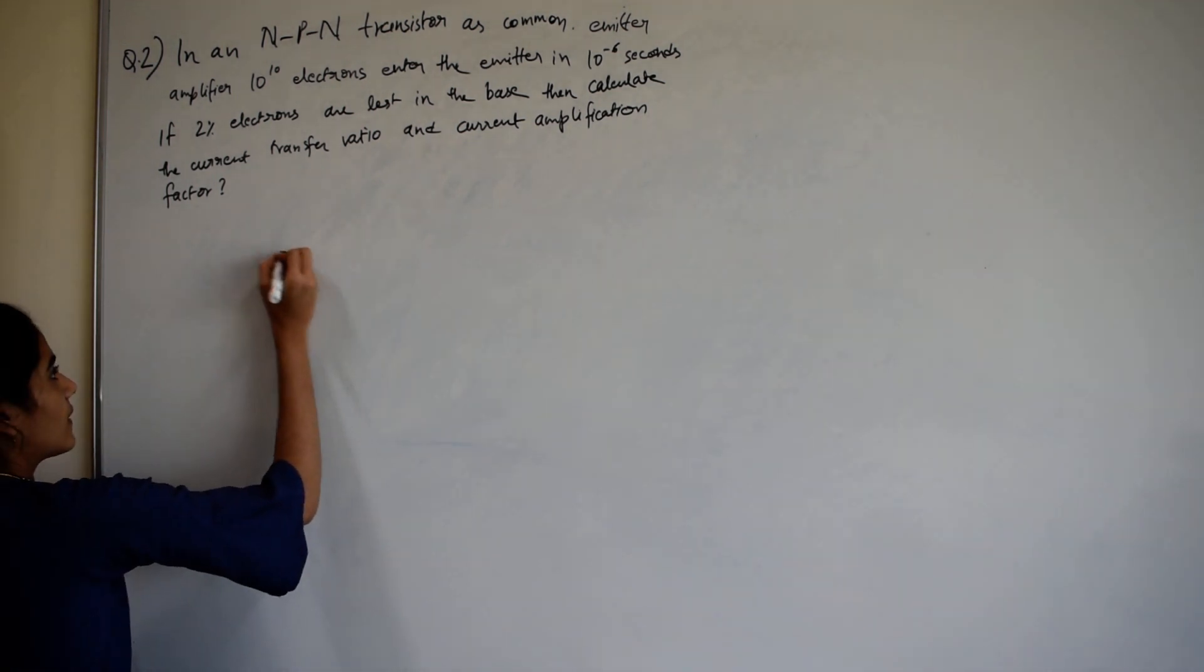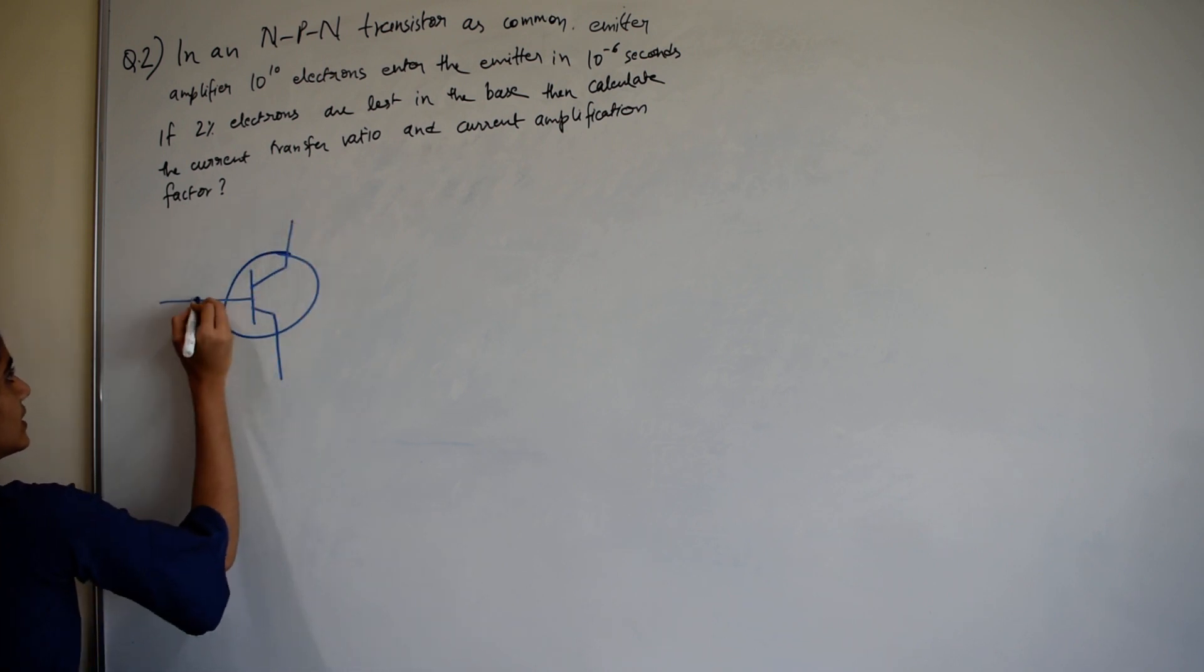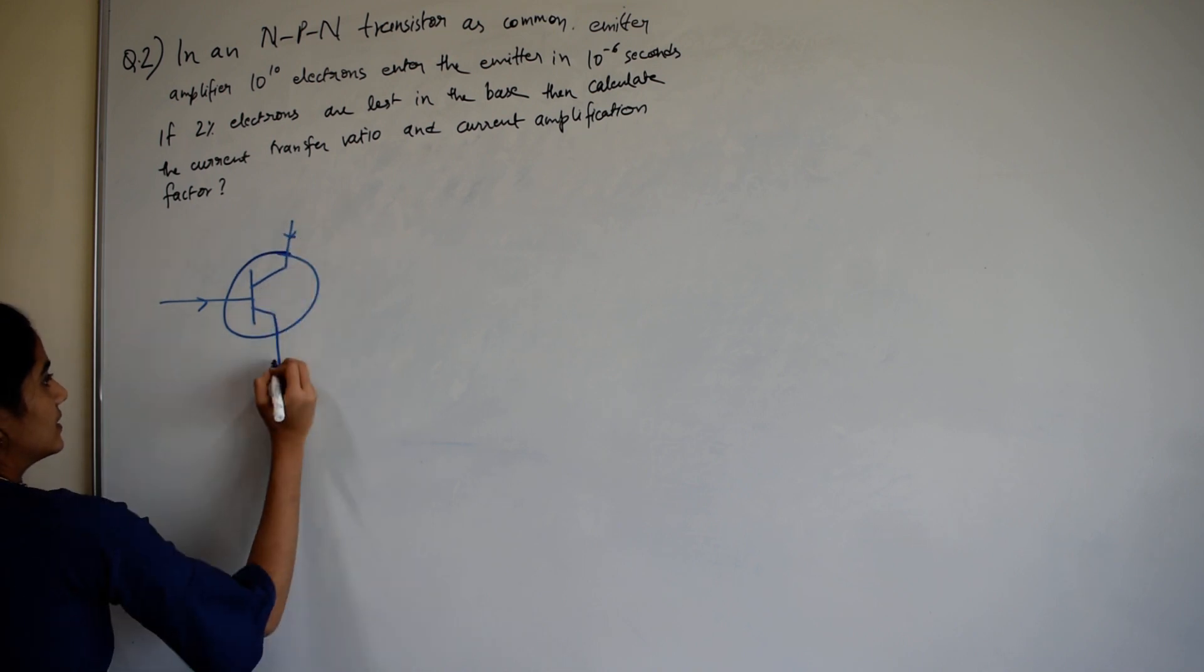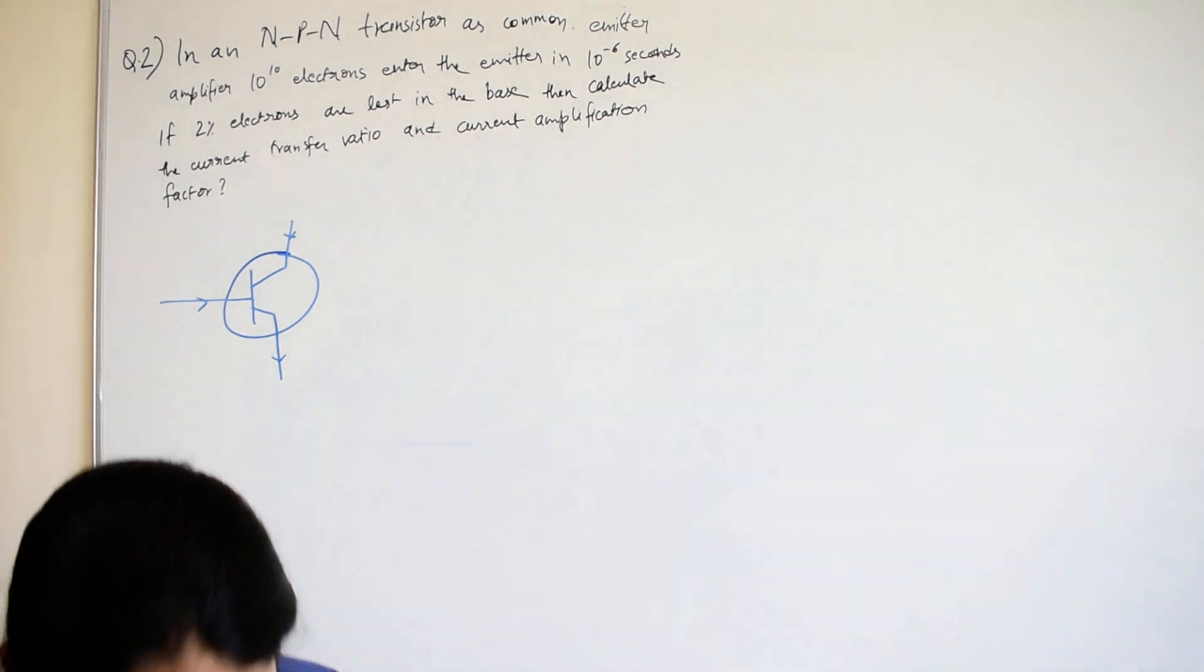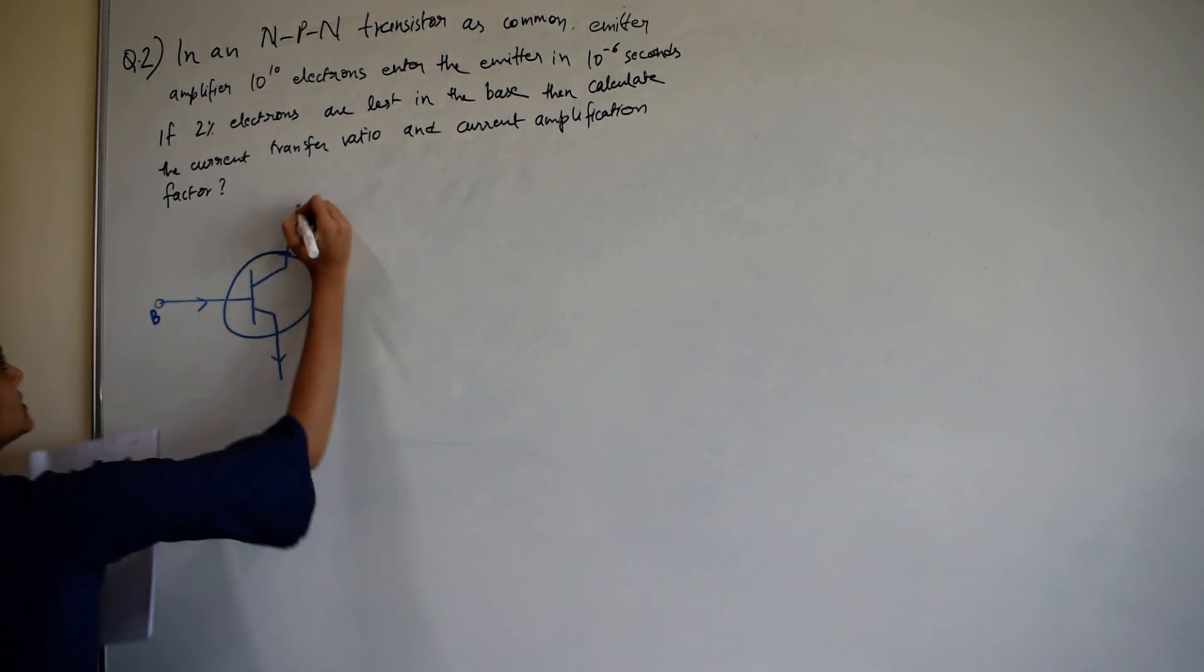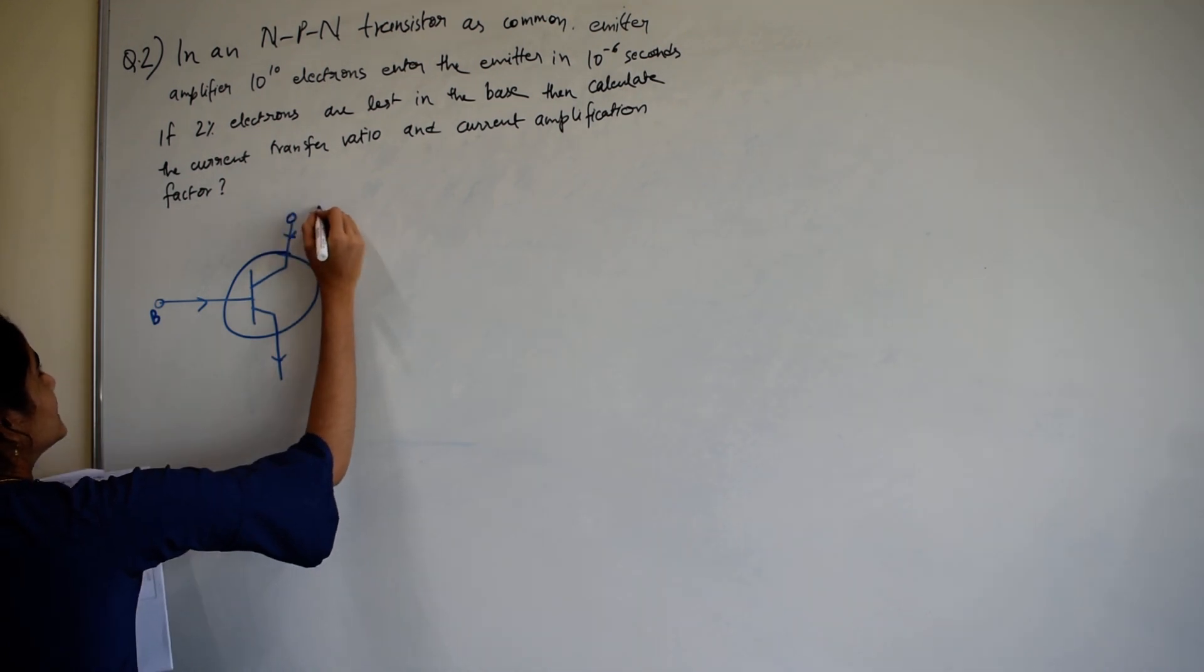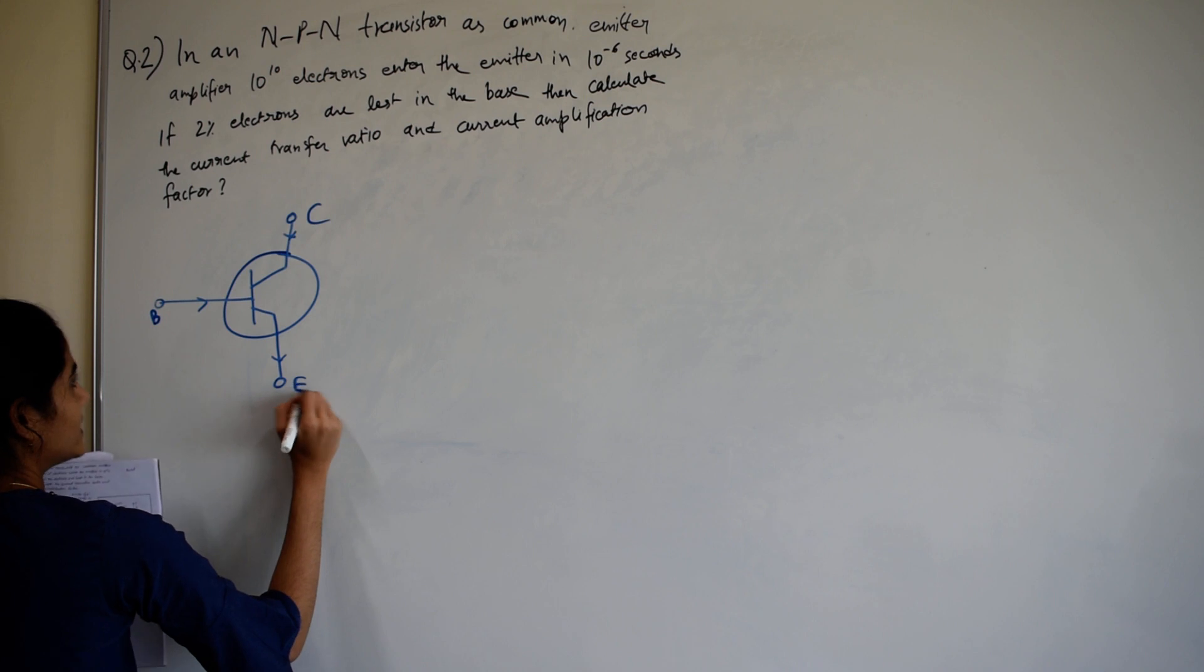So here, we have our transistor here. Here, base, emitter and collector.